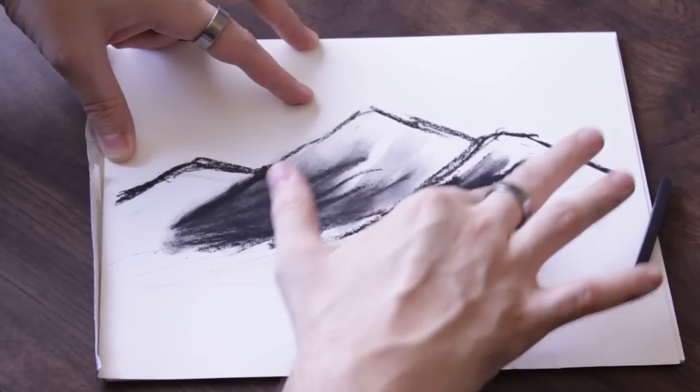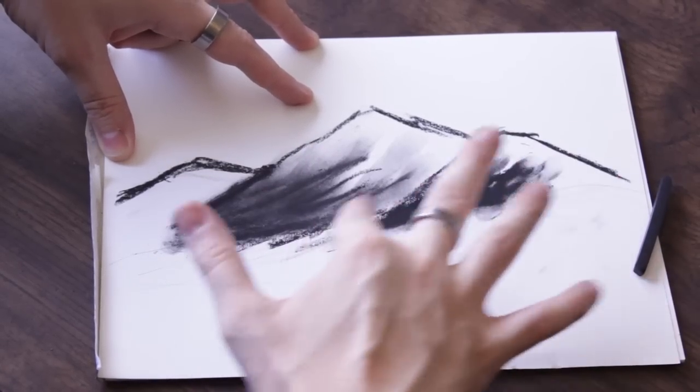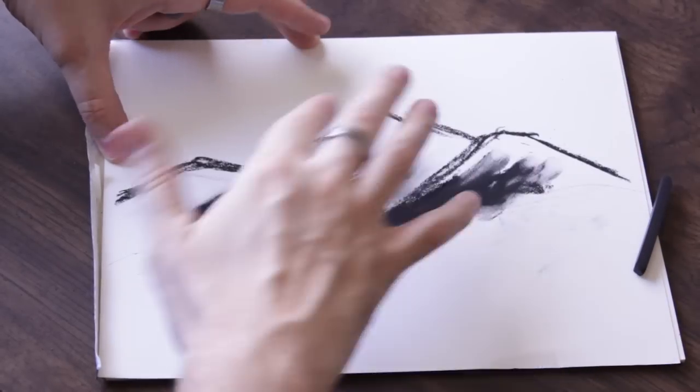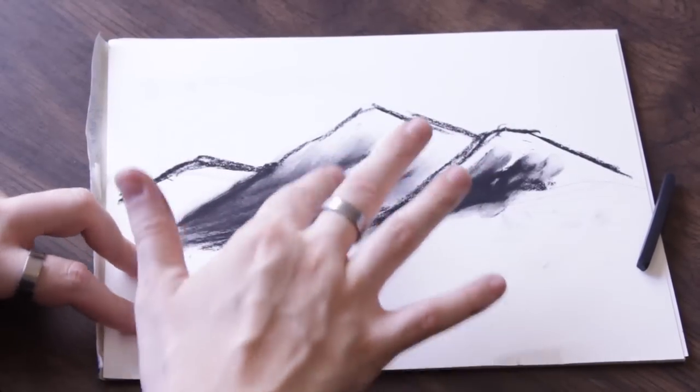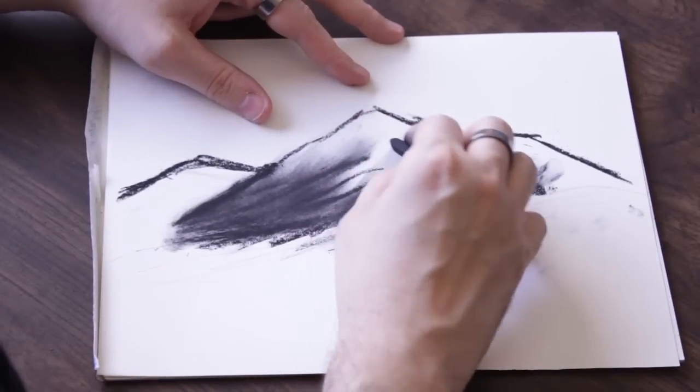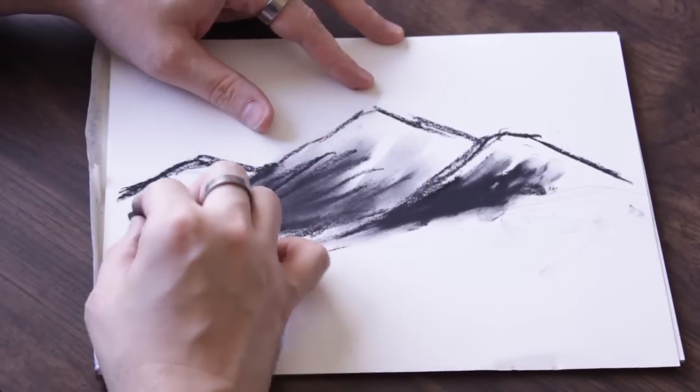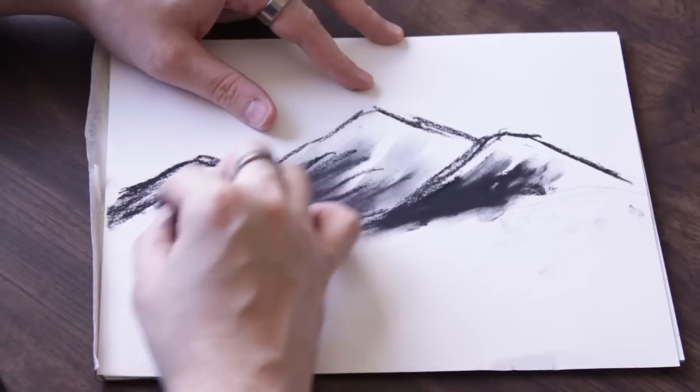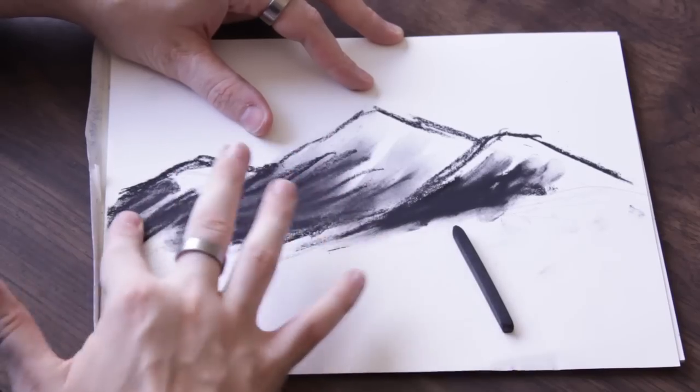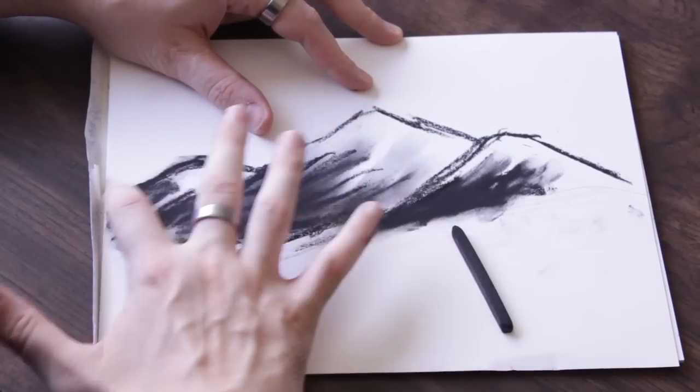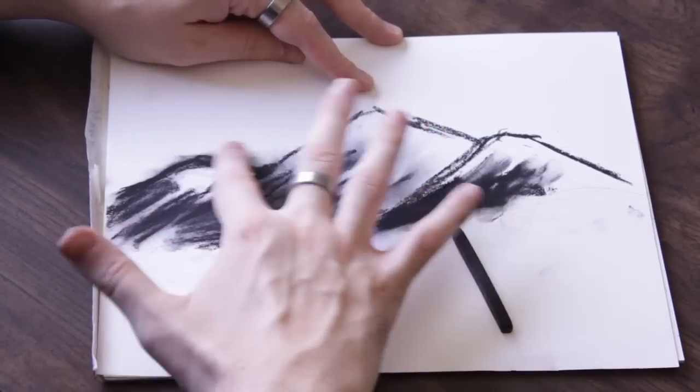Peaks are going to have snow on them and the other thing that you want to remember is that your light source is coming from one direction. Okay so in this case it'll be the Sun. So we have the darker areas to the western side. And so maybe it's a little bit of a morning painting here.